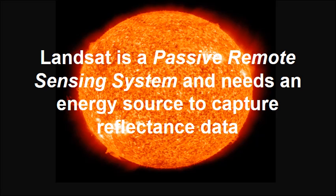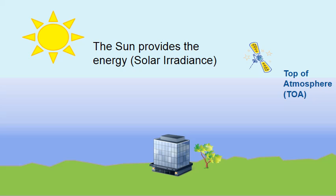Landsat is a passive remote sensing system and needs an energy source to capture any reflectance data. The sun provides the radiance, or solar irradiance energy, for its collection of data by the Landsat platform.